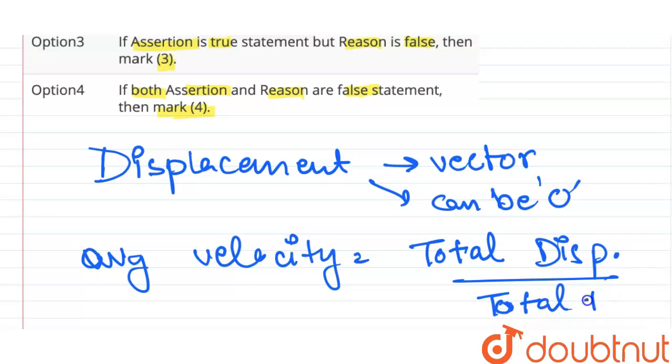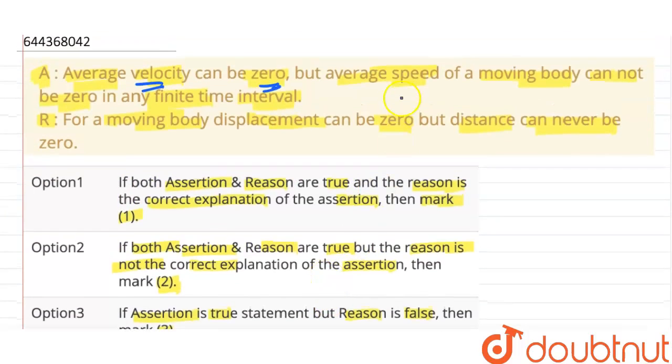So average velocity can be zero. But at the same time, distance is a scalar quantity and average speed is total distance upon total time. So it cannot be zero.